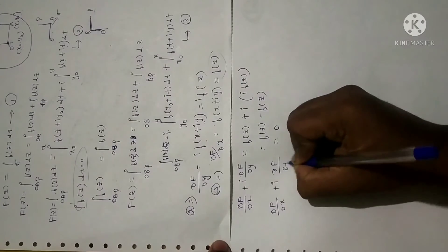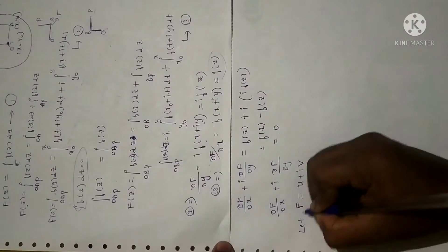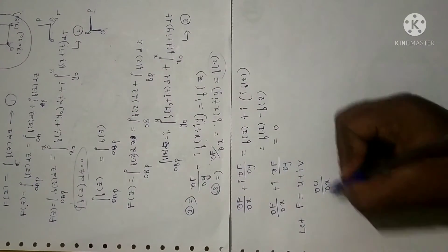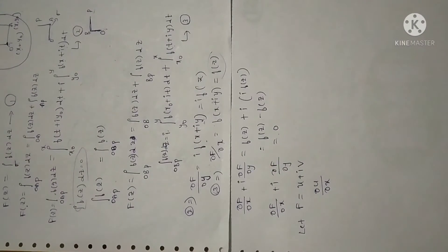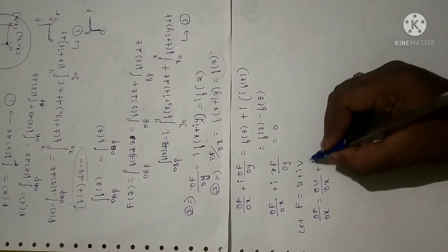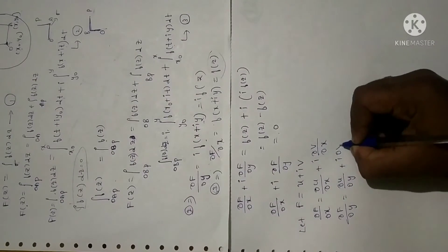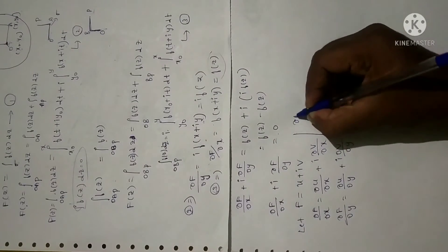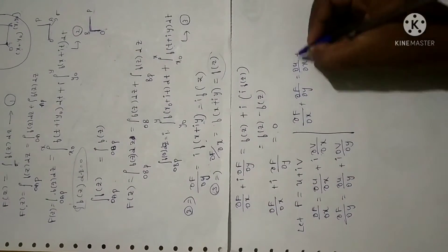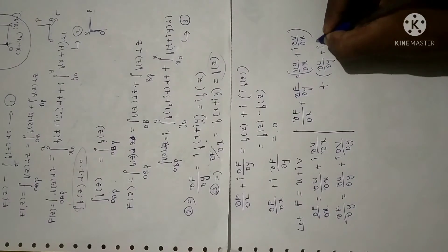So we have ∂F/∂x + i · ∂F/∂y = 0. Now let F = u + iv. Differentiating: ∂F/∂x = ∂u/∂x + i · ∂v/∂x, and ∂F/∂y = ∂u/∂y + i · ∂v/∂y. Adding them: ∂F/∂x + i · ∂F/∂y = ∂u/∂x + i · ∂v/∂x + i · ∂u/∂y + i² · ∂v/∂y.